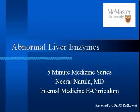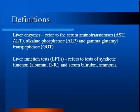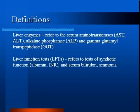This is the 5-Minute Medicine Series on Abnormal Liver Enzymes. The most common liver enzymes that are assessed are the serum aminotransferases, AST and ALT, alkaline phosphatase, and GGT.